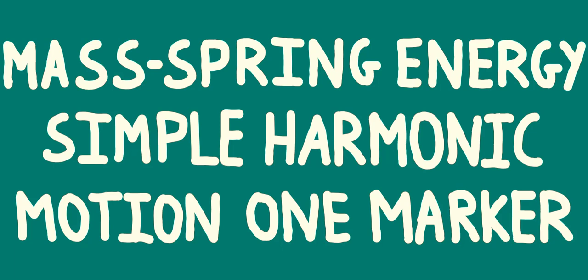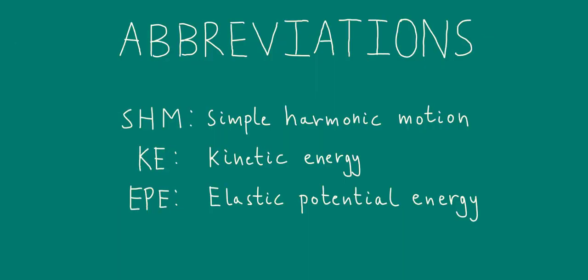Throughout this video, we'll be using a few abbreviations. Simple harmonic motion is commonly just referred to as SHM. Likewise, kinetic energy, we'll just refer to that as KE, and elastic potential energy, we'll just call that EPE.